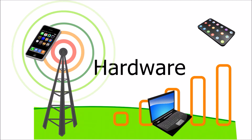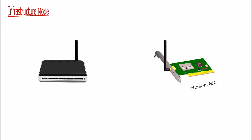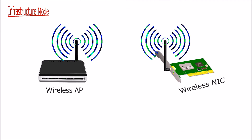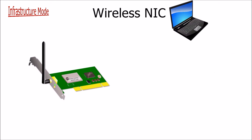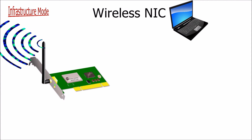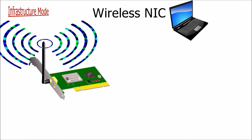The wireless NIC and the wireless access point are the two fundamental technologies used in wireless networks. These two connect with each other to transmit data. For a device to communicate on a wireless network, it needs to have a wireless NIC, which will achieve a wireless connection.